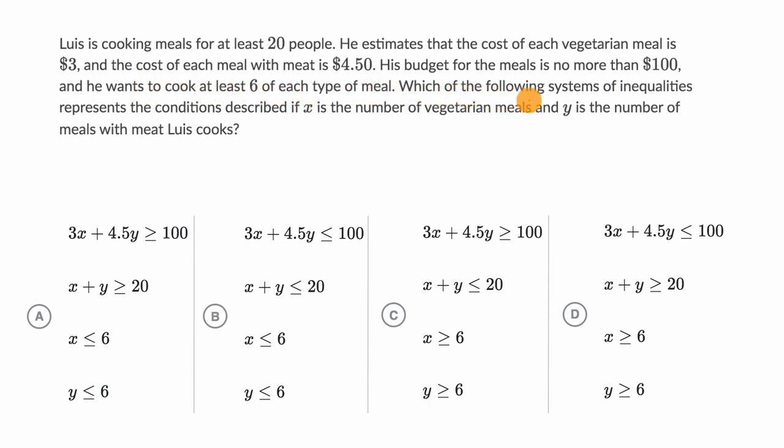Which of the following systems of inequalities represents the conditions described if X is the number of vegetarian meals, and Y is the number of meals with meat Luis cooks?